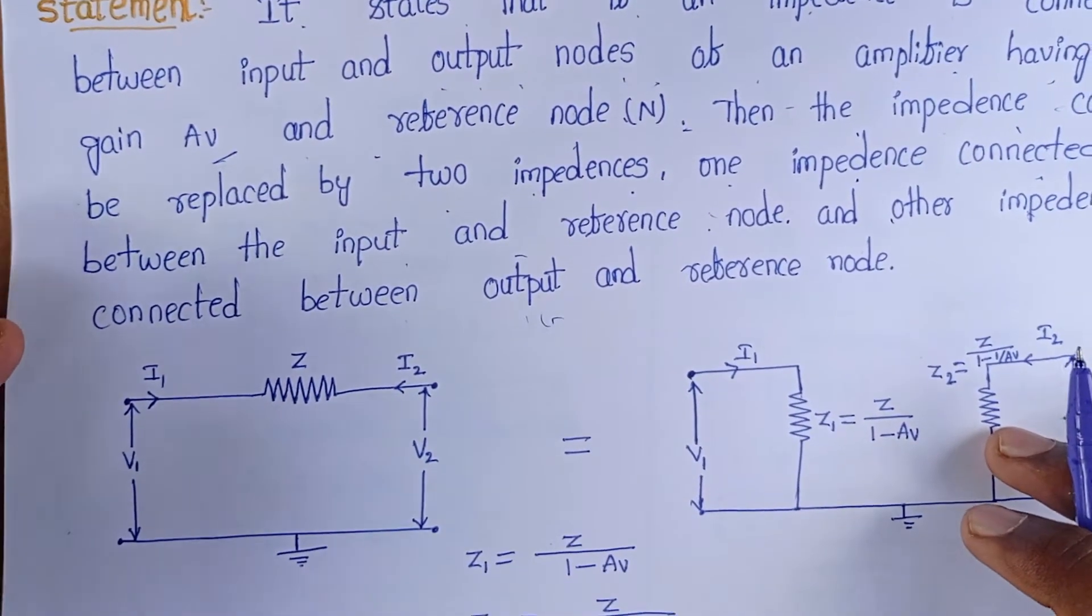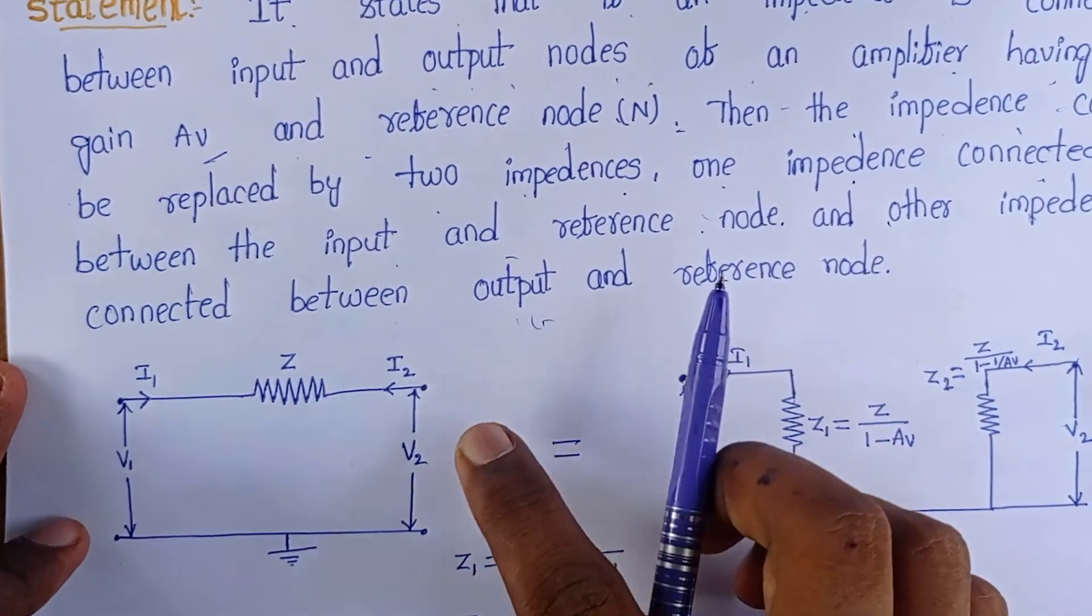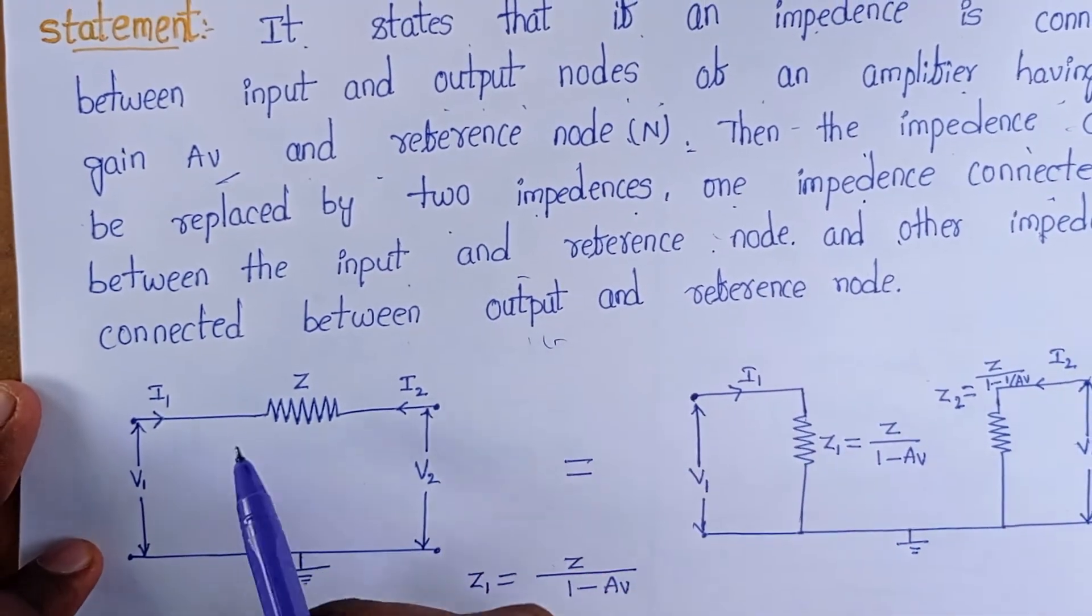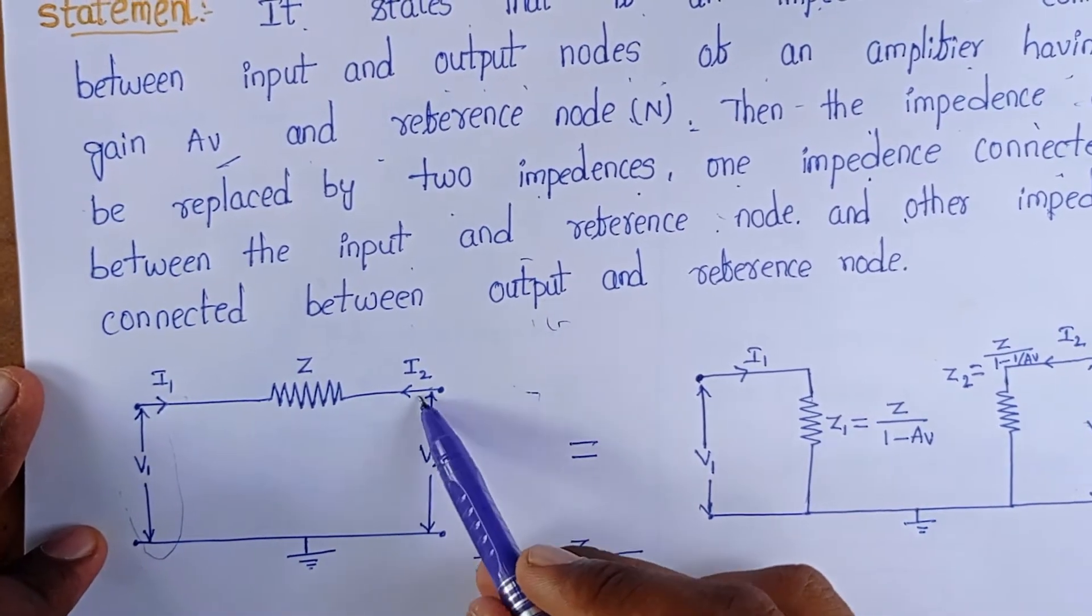Let's see these circuit diagrams, then we can understand better. Here observe, this is the two port network. Two port network means this is one port, this is input port and this is the output port.